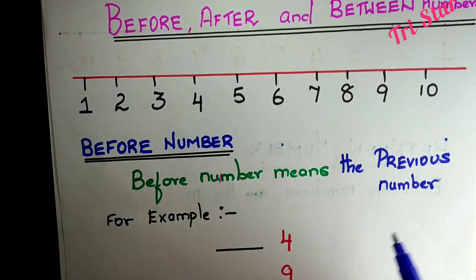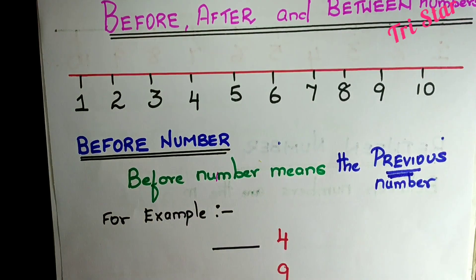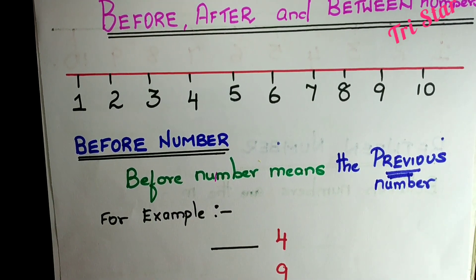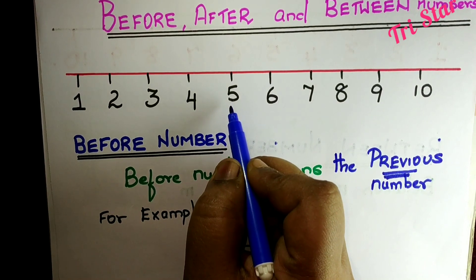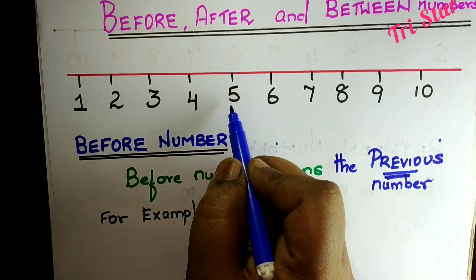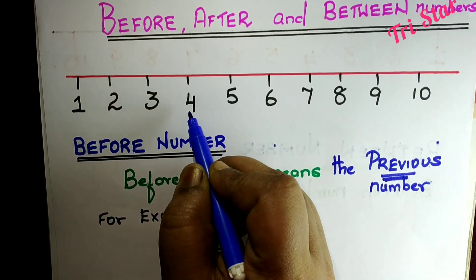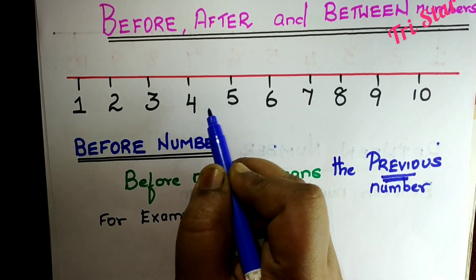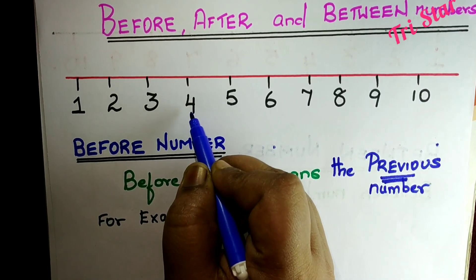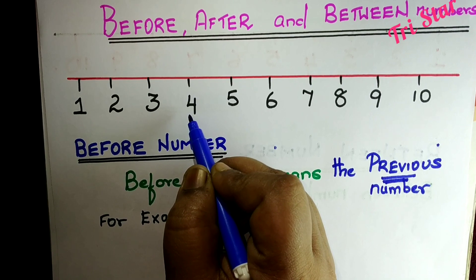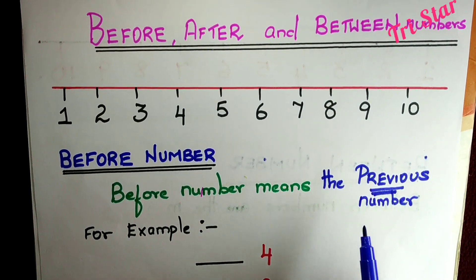What is the previous number? For example, take number 5. What is the previous number of 5? It is 4. So, before number means the previous number.